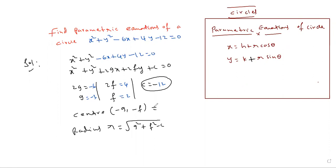Now center: (-g, -f) = (3, -2). Radius r = √(g² + f² - c). Substitute g = -3: (-3)² + 2² - (-12) = 9 + 4 + 12 = √25 = 5. So r = 5.